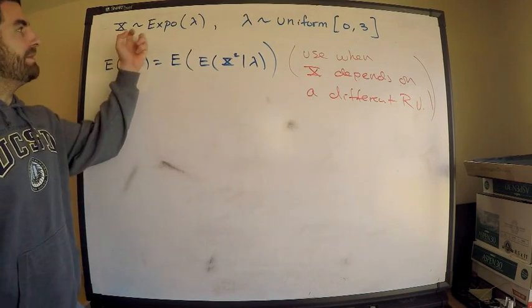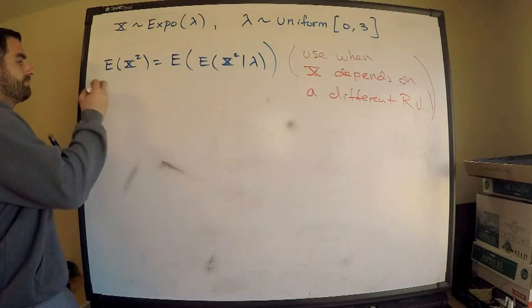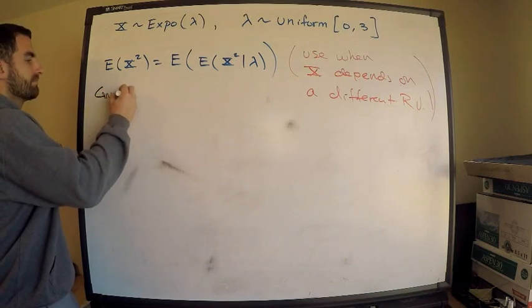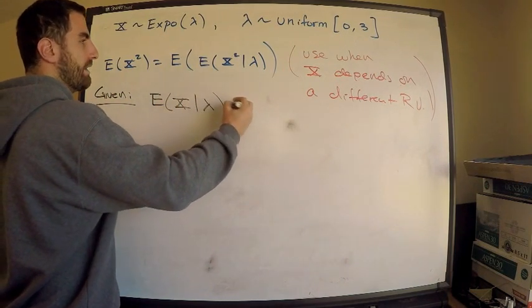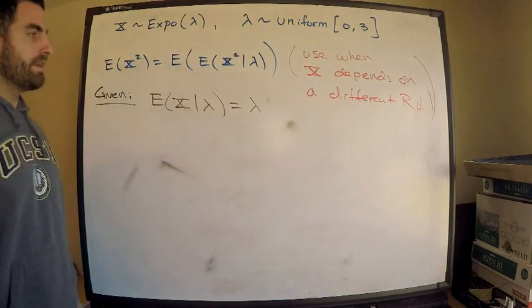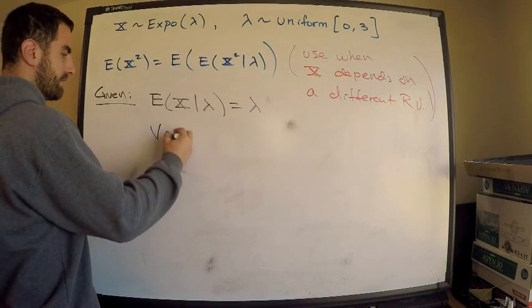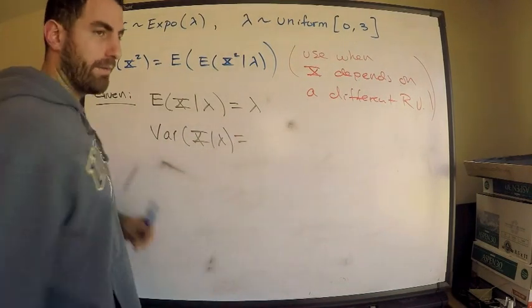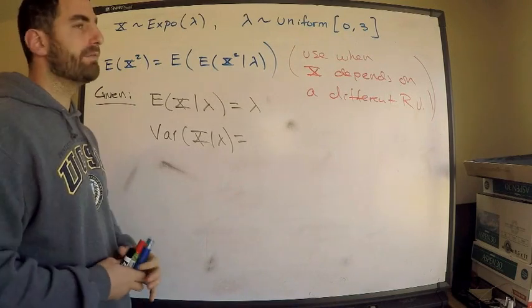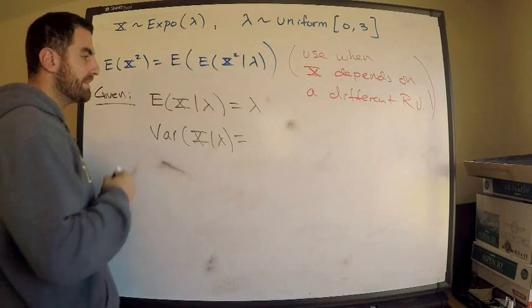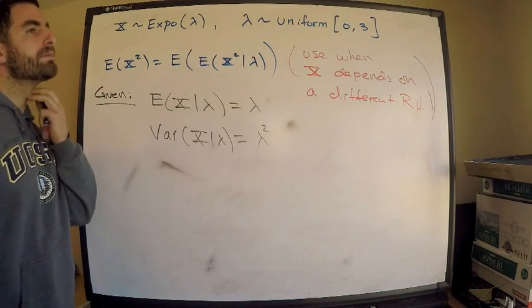Okay, so let's write down what we know so far. We're given the question that x has mean lambda. So what you need to gather from that actually though, is that we're given that the expected value of x, given lambda, is equal to lambda. Now, what is the variance? What is the variance of x? The variance of x given lambda, again, I want to just, this is just really computing the variance of the exponential random variable x. You know that this is just lambda squared.